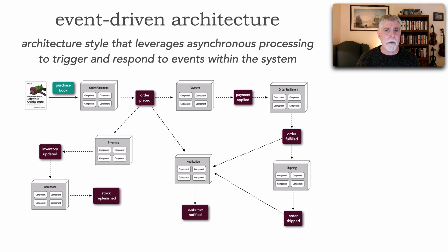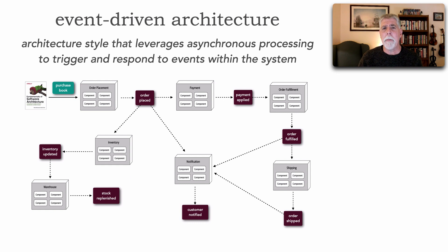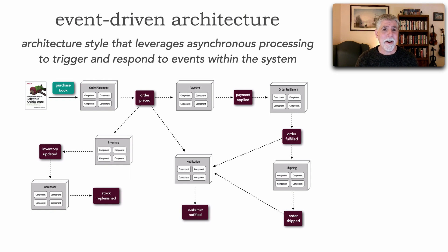I've read a lot of those articles and a lot about event-driven architecture in general. What I found is that there are a lot of services within cloud, a lot of frameworks, and a lot of explanation about the good things about event-driven architecture. But I haven't seen a whole lot of information about the trade-offs and the cons. What makes it so hard? And that's what I really want to talk about in this lesson.